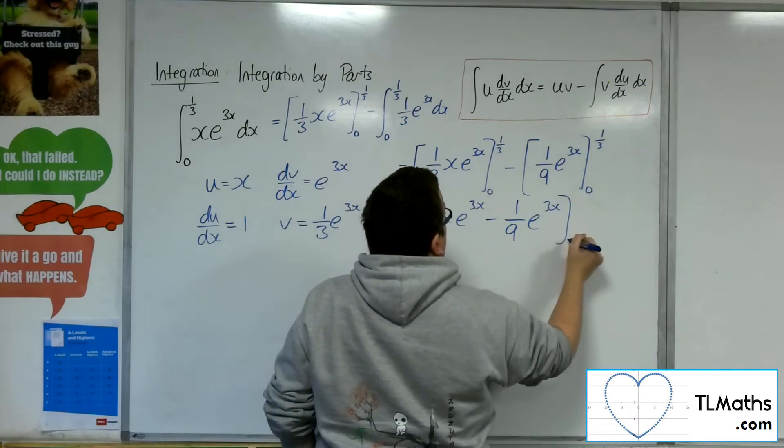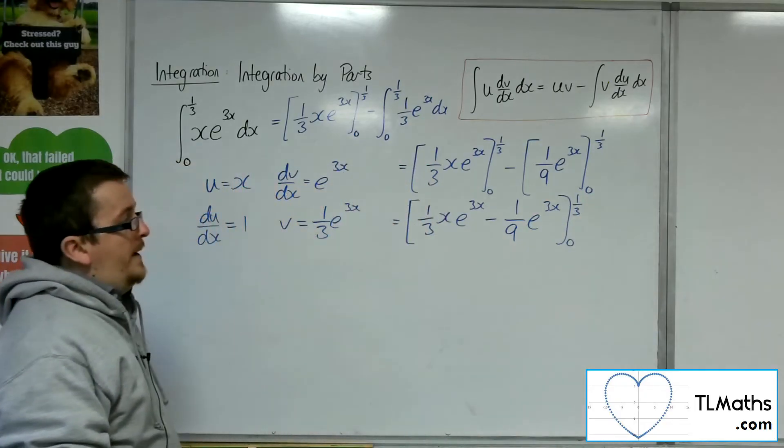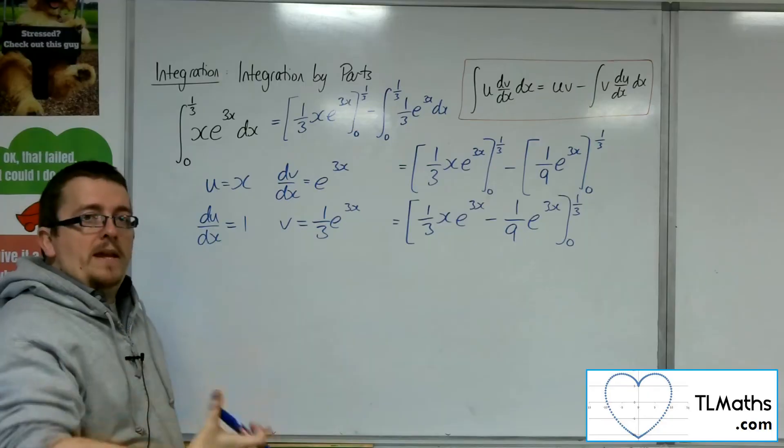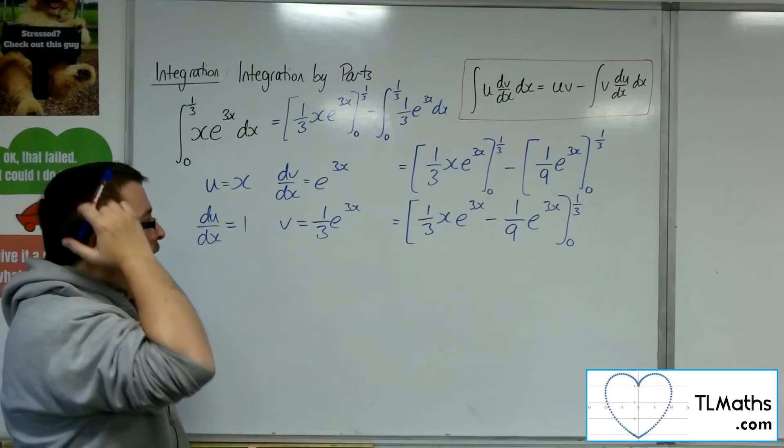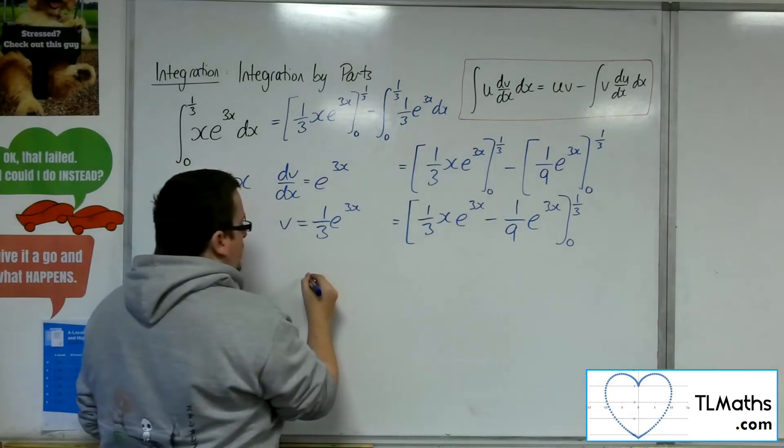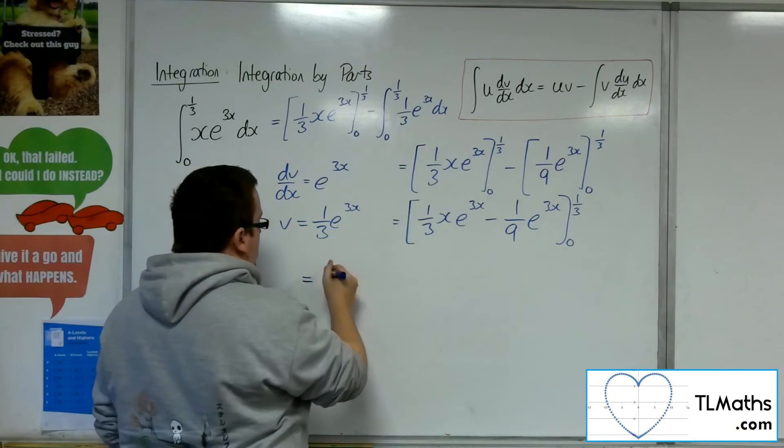So you can bring those two square brackets together and evaluate it as one big thing at the end. This makes it a lot easier. So don't think that you've got to evaluate it stage by stage. Just leave it all to the end.